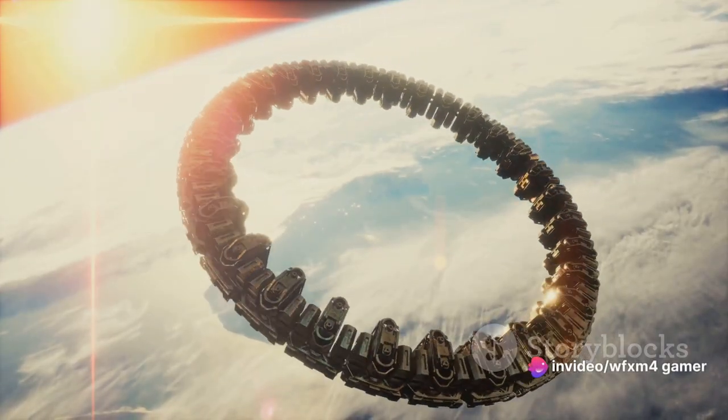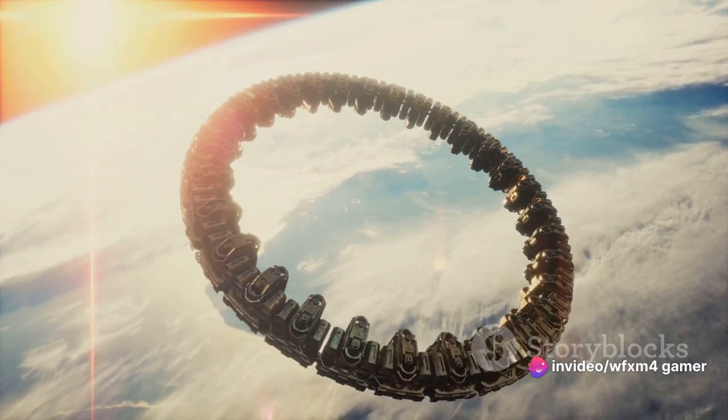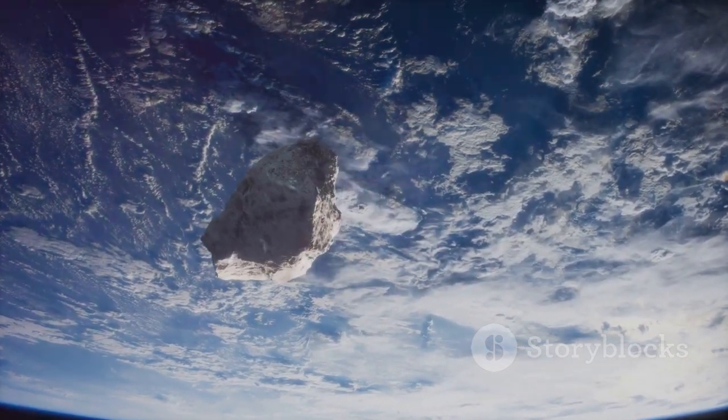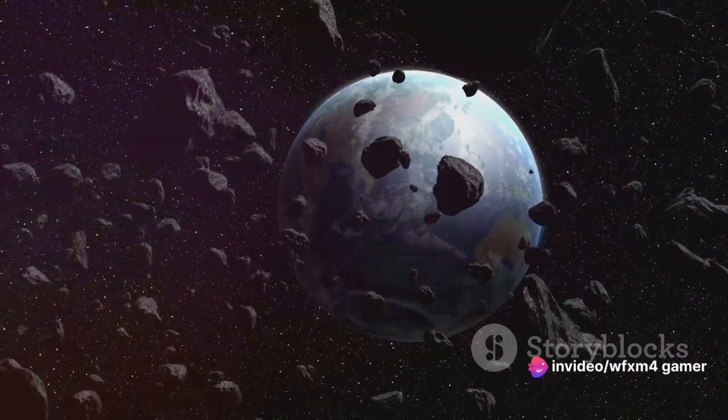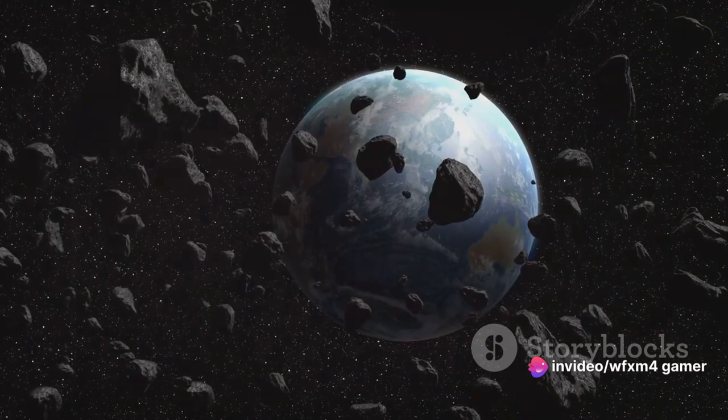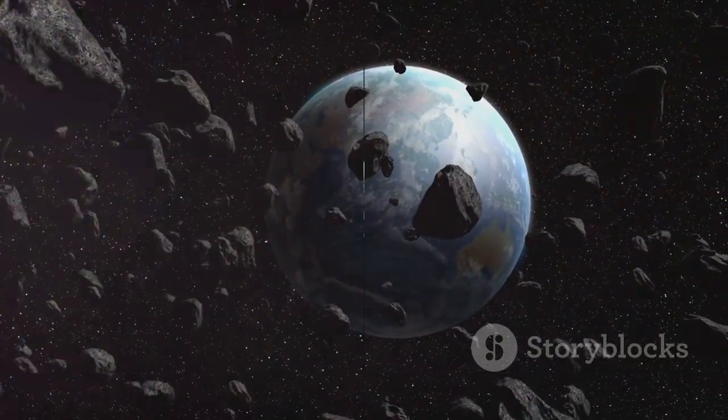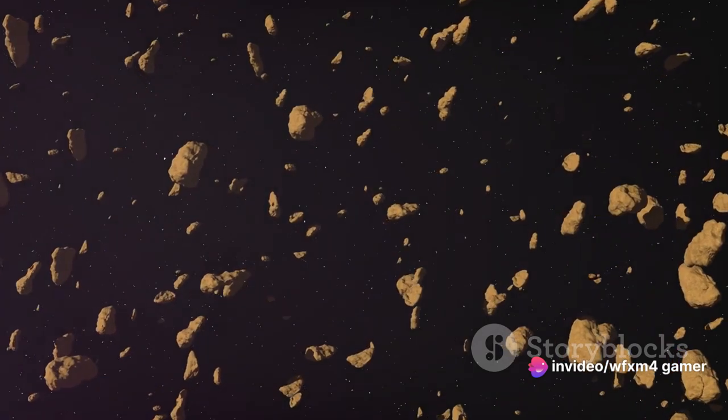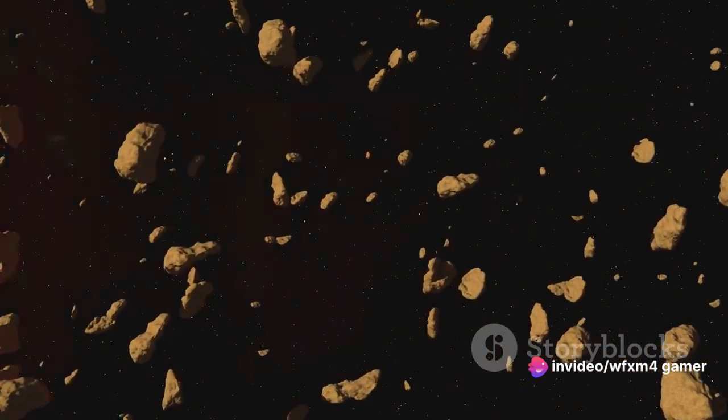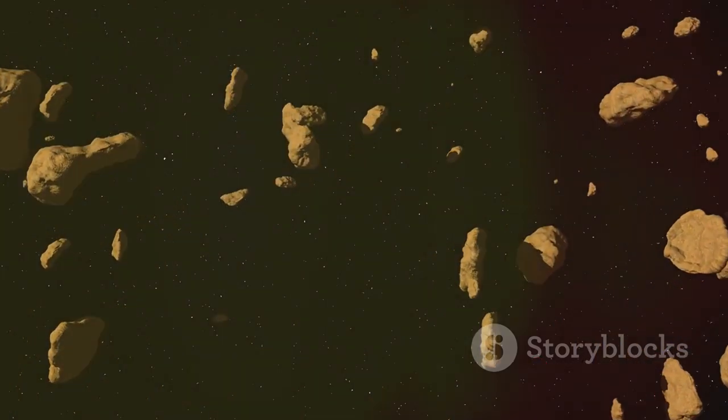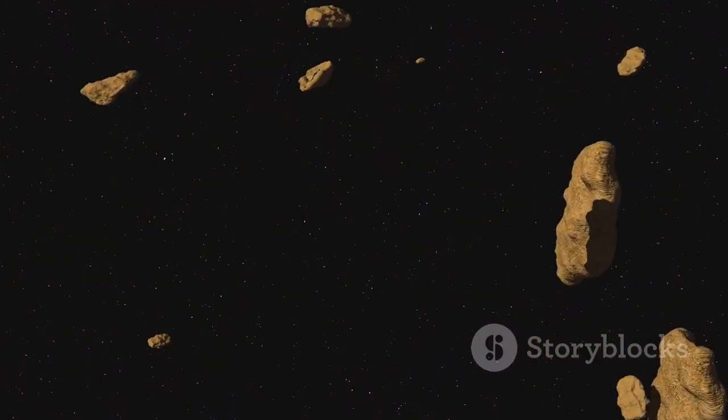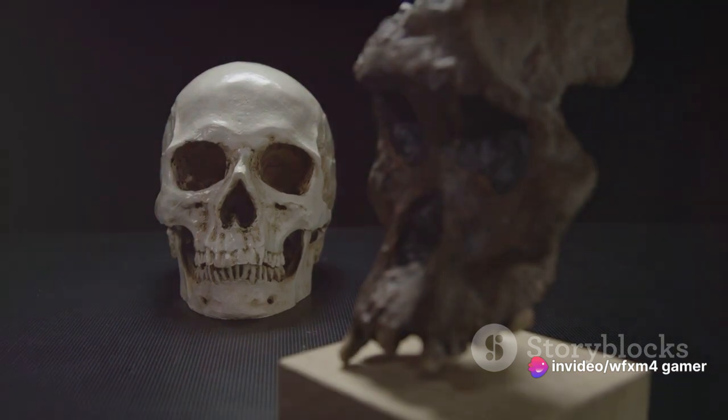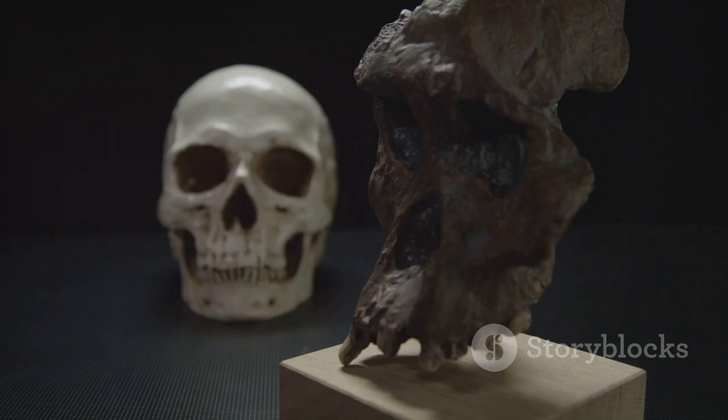And, it was within this thriving and diverse world of mammals that the stage was set for the arrival of a new player, a creature unlike any the world had seen before, a creature that would change the course of life on Earth forever. Slowly but surely, mammals began to diversify and occupy various ecological niches, paving the way for the arrival of a particularly intelligent species. Among the diverse array of mammals, one lineage would eventually give rise to a species like no other, the Homo sapiens. These early humans, our direct ancestors, embarked on an evolutionary journey that would ultimately set them apart from all other life forms. In the heart of Africa, around six million years ago, a group of primates began to experiment with a new way of getting around, walking on two legs.